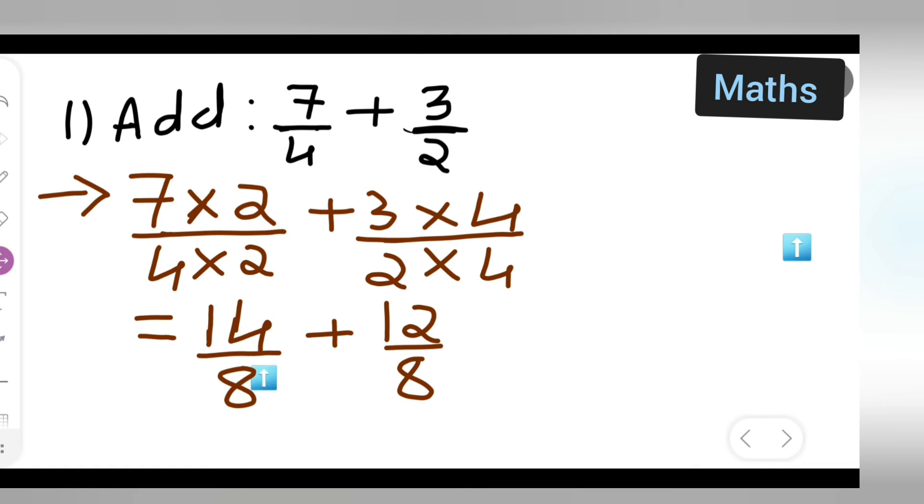Now we have the same denominator, so now add these two numbers. 14 plus 12 will give you 26. So 26 upon 8.